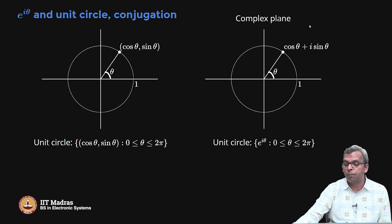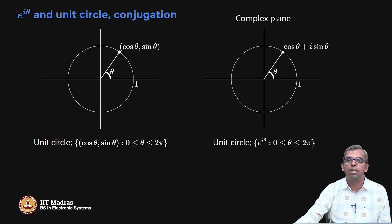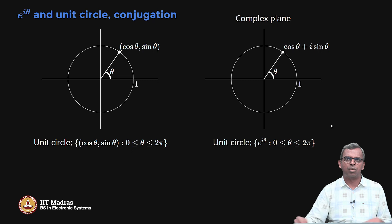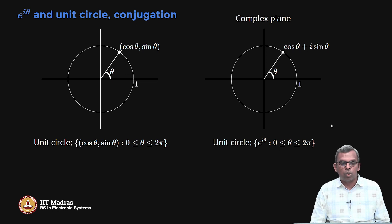In the complex plane, the unit circle is the set of all complex numbers with absolute value equal to 1, which is the same as e^(iθ) for θ from 0 to 2π. So e^(iθ) traces out the unit circle, and the connection becomes very clear: e^(iθ) is the unit circle.